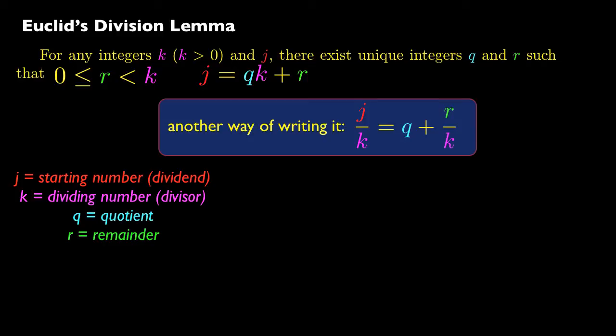And not only can you find a quotient and a remainder, but those quotients and remainders are unique. So there's only one quotient and one remainder for any dividend and divisor, j and k.